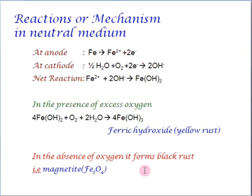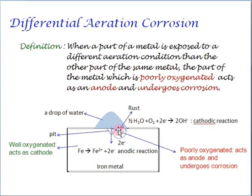In the absence of oxygen, it forms black rust, which is magnetite. Now, let us see where rust has formed. If you look at, rust has neither formed at anode or the cathode, but it has formed between the anode and the cathode. Now, because the Fe2+ ions formed at the anode and the hydroxide ions formed at the cathode both diffuse towards each other to form rust or the corrosion product between the anode and the cathode. So, the corrosion product never forms at anode or at cathode, but it forms between the anode and the cathode.